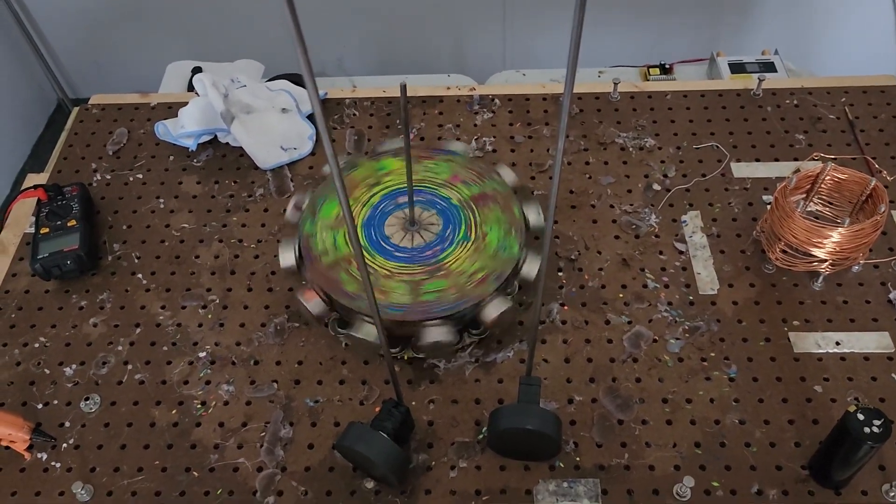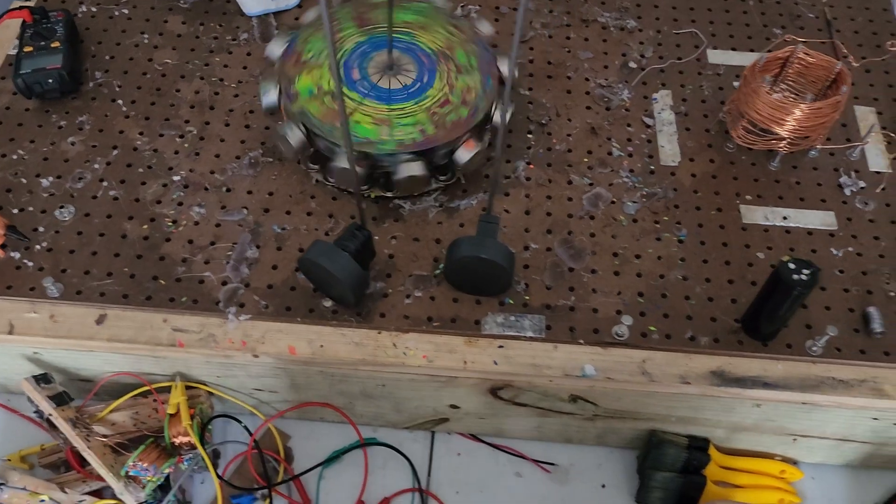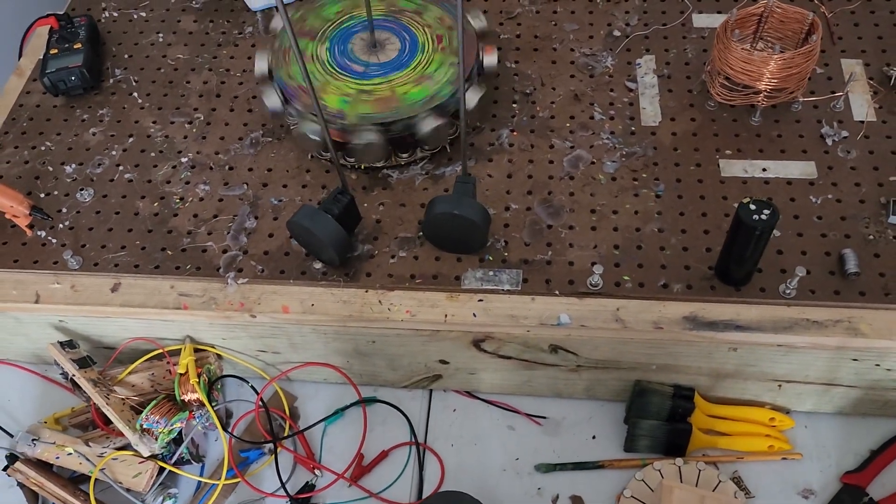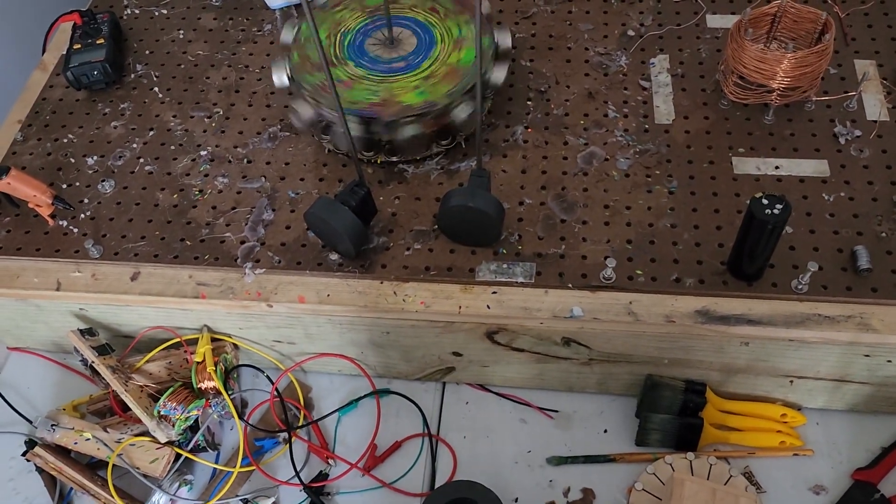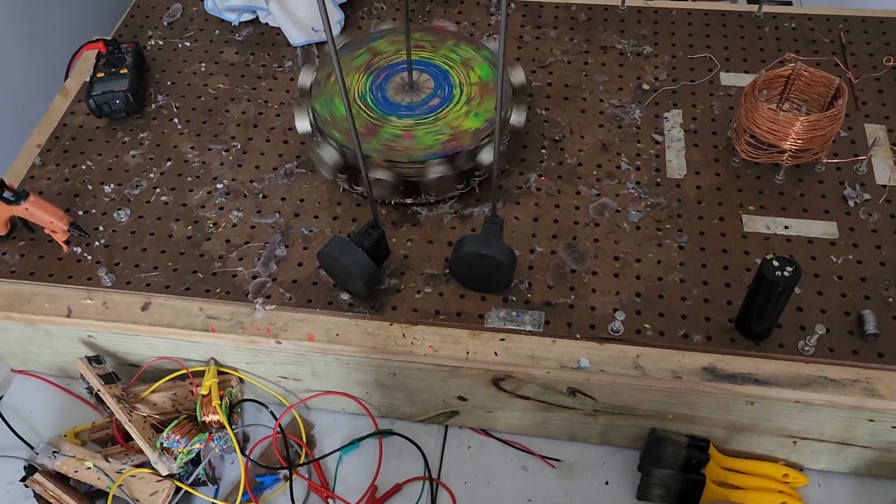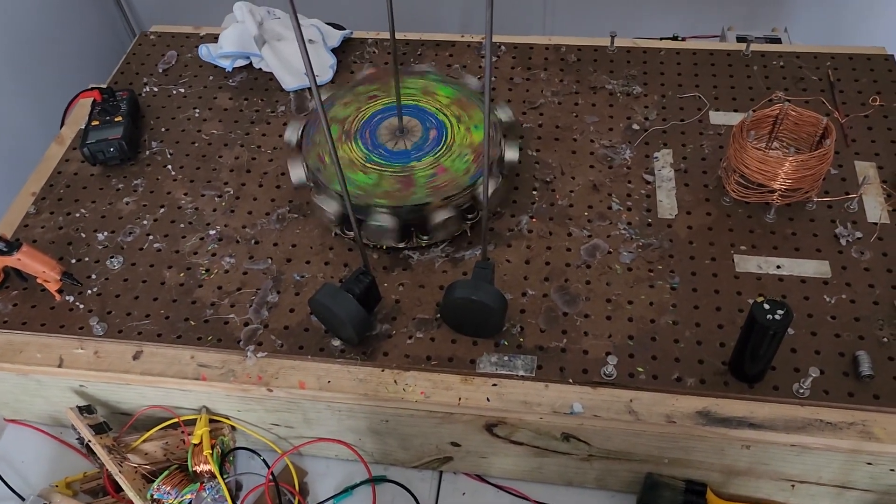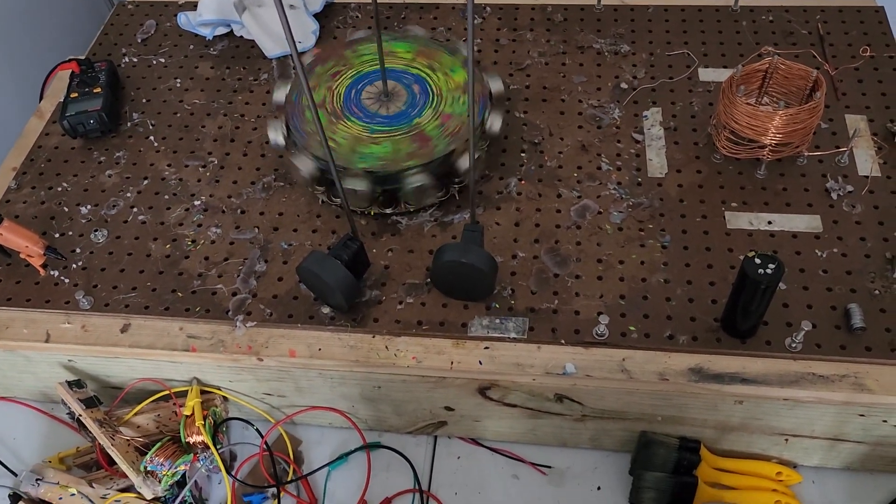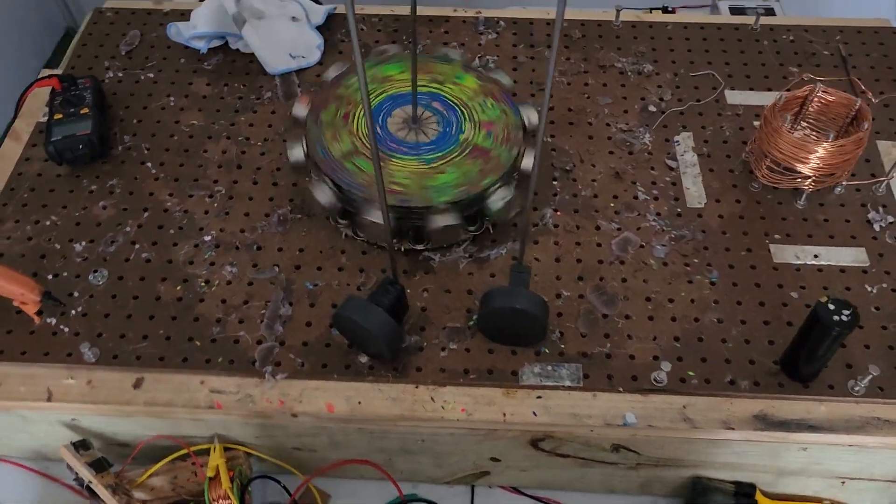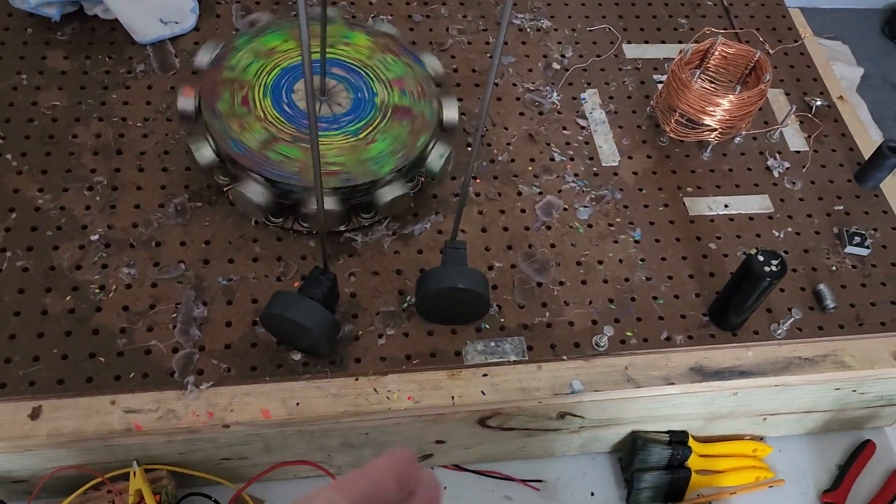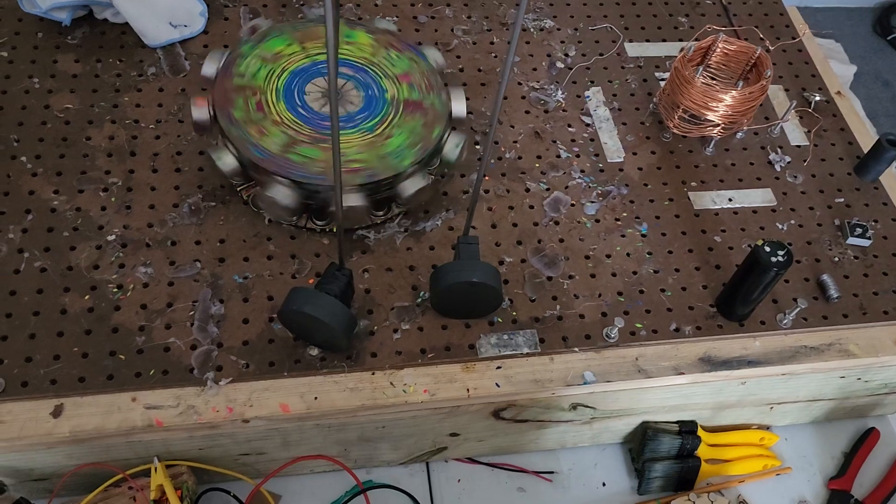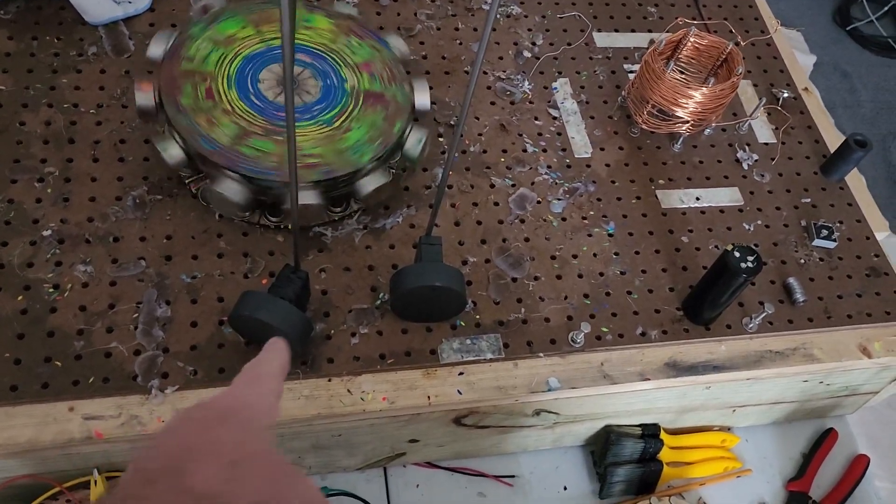Now the question here is does having the stator magnets on the outside increase motion or does it decrease motion? Of course we're only testing the angle in which they're at right now, and still one is yoked and the other is not.